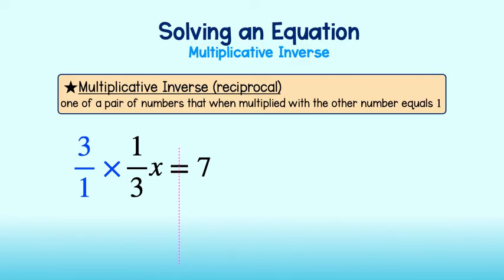So, let's go ahead and multiply to get 1x or just x. I have to keep my equation balanced, so I will multiply by 3 on the right-hand side as well to get 21. We see that x is equal to 21.